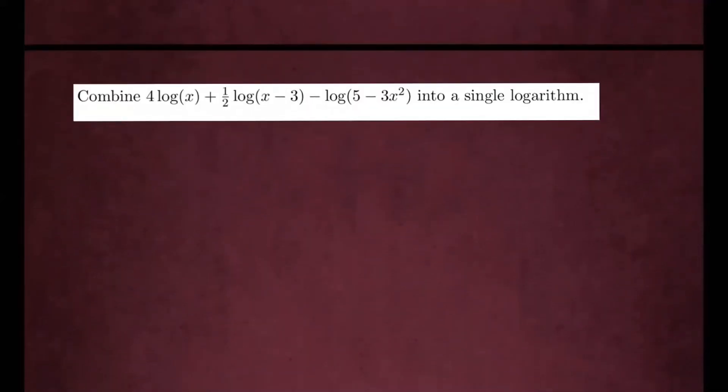If I see a number in front of my logarithms, I'm going to represent them as exponents. So those two will represent as exponents. You will have log of x to the fourth power, second one plus log of x minus three to the one half power.